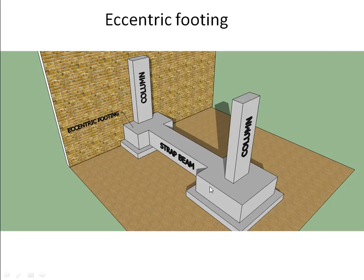The same thing can now be seen in the three-dimensional sketch. This is the adjoining structure and its wall. This is the column with the eccentric footing, and this is the column with a regular footing, and they are both joined together by means of a beam called a strap beam.